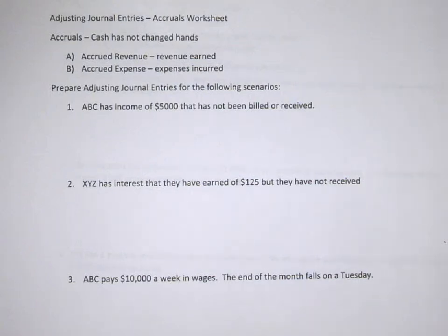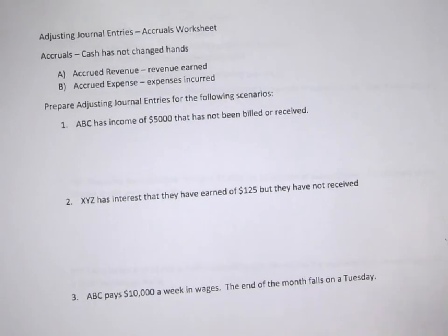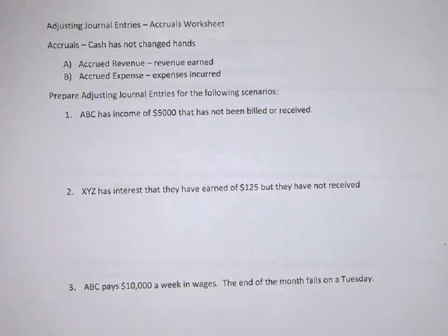We're going to look at the adjusting journal entries, and this is the accruals worksheet, which means we're only looking at what happens for the accrual journal entries — adjusting journal entries. So accruals: what we look at is cash has not changed hands yet. In other words, this information has not been recorded at all. It doesn't show up on a balance sheet. It doesn't show up on an income statement.